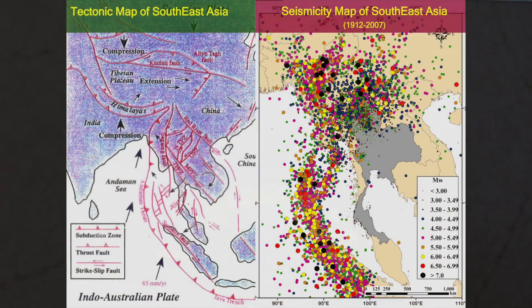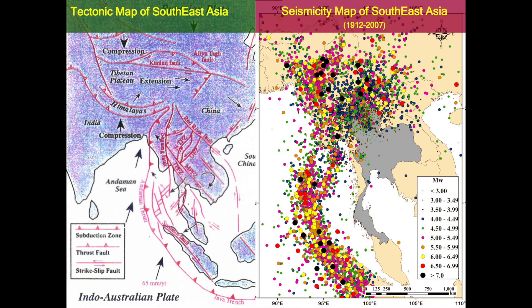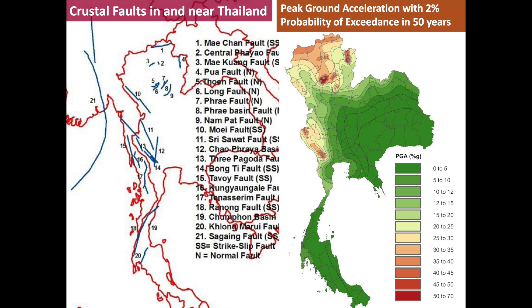This is a map showing the ground motion parameter and index that indicates the ground shaking intensity — specifically peak ground acceleration. It is a map used to define the ground shaking intensity at depth.